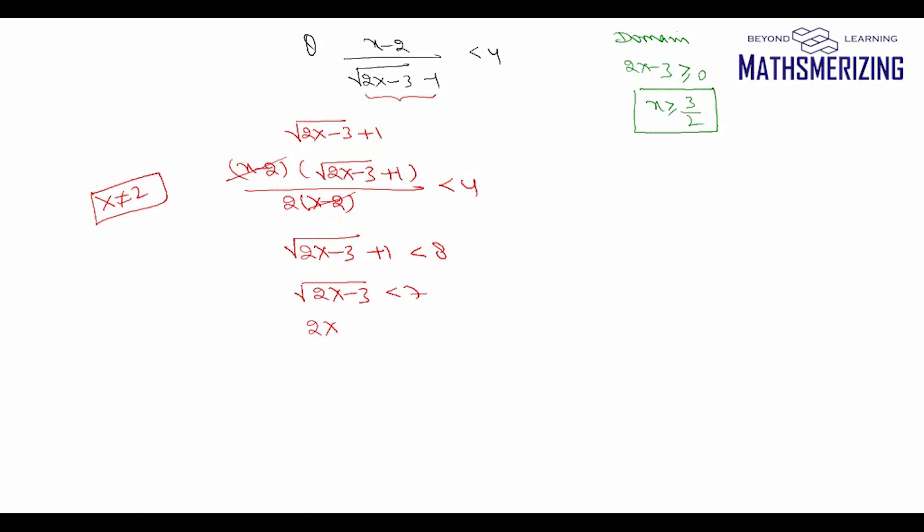If I square, I'll get 2x - 3 is less than 49. x is less than 26.